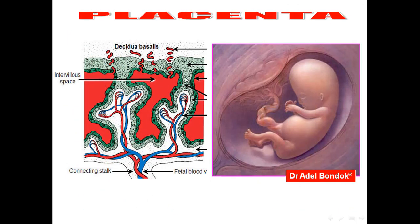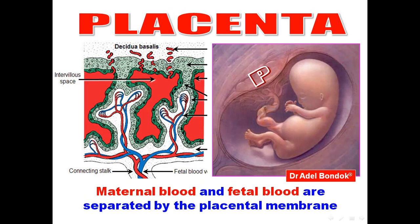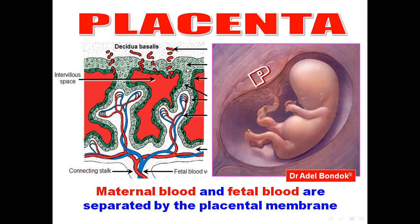These are the tertiary villi: anchoring villi attached to the decidua, and free villi projecting into the intervillous spaces. This is the maternal blood and this is the placental membrane. Before the fourth month, the placental membrane is formed of four layers: syncytiotrophoblast, cytotrophoblast, mesoderm, and the endothelium of the blood capillaries.